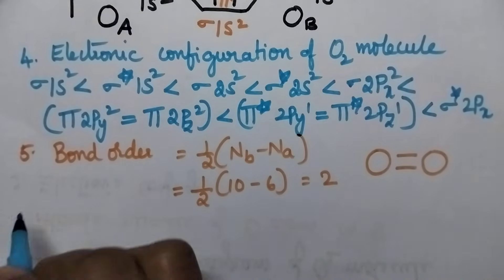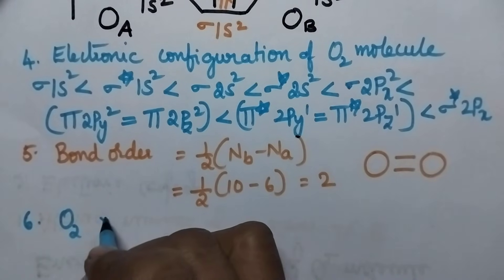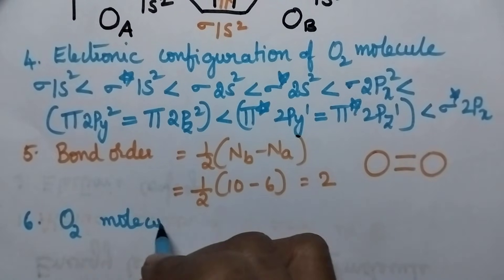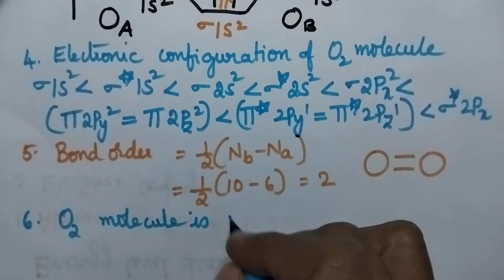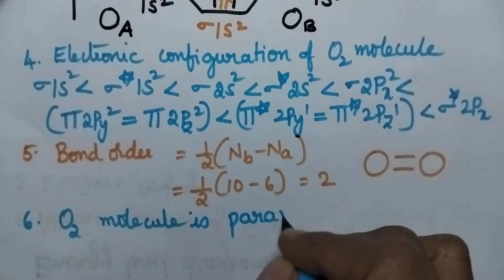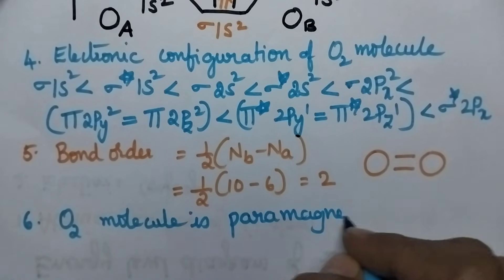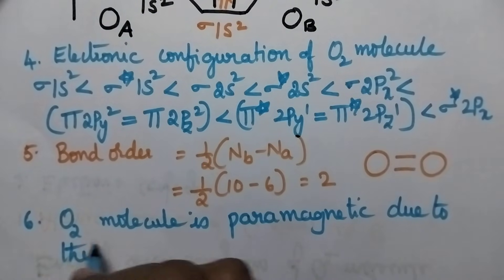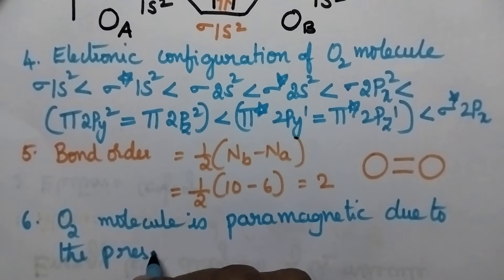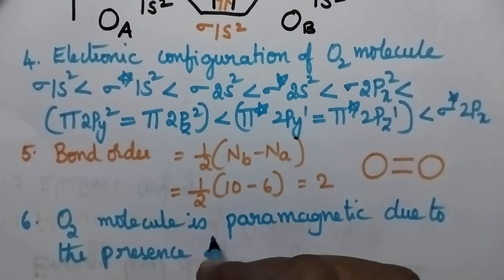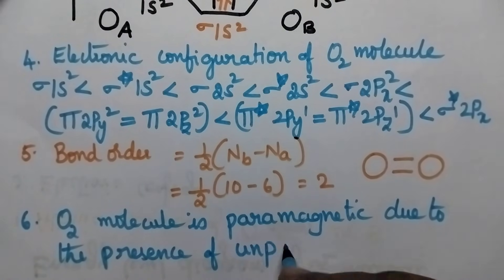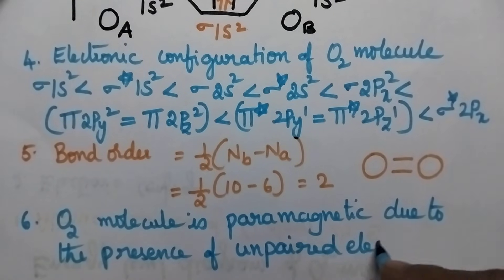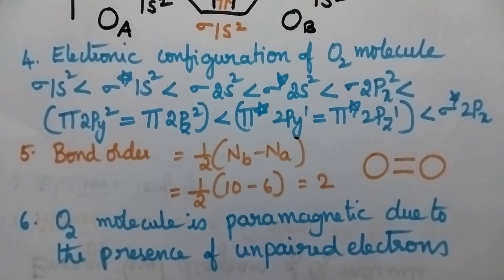Coming to the magnetic behavior, the O2 molecule is paramagnetic due to the presence of unpaired electrons. If you like the video, don't forget to like, share, and subscribe. Thanks for watching, have a nice day.